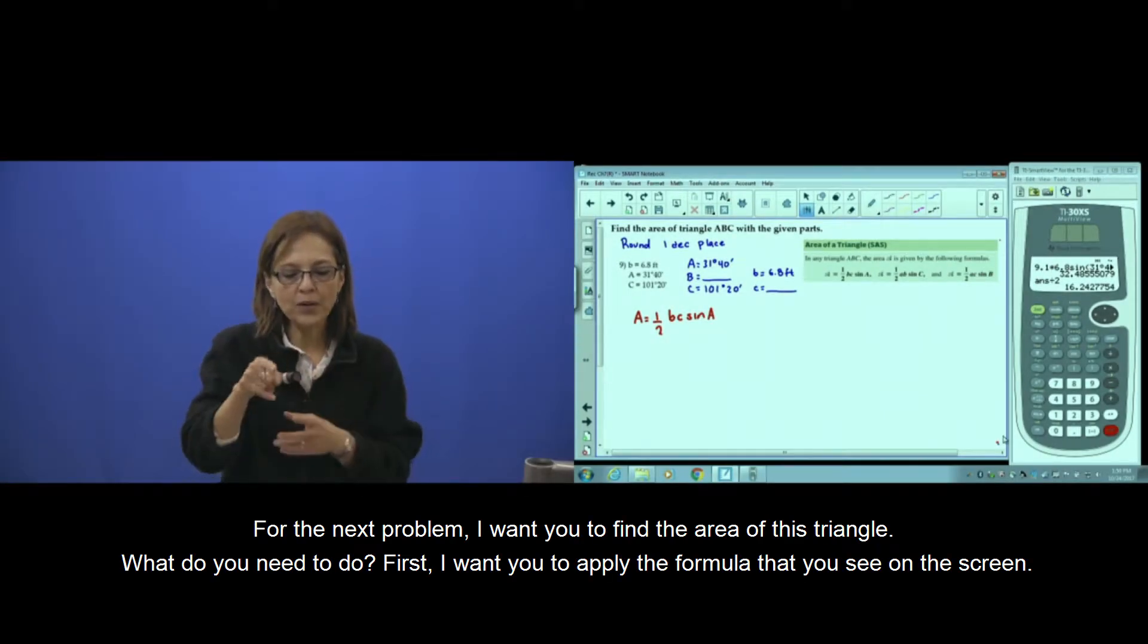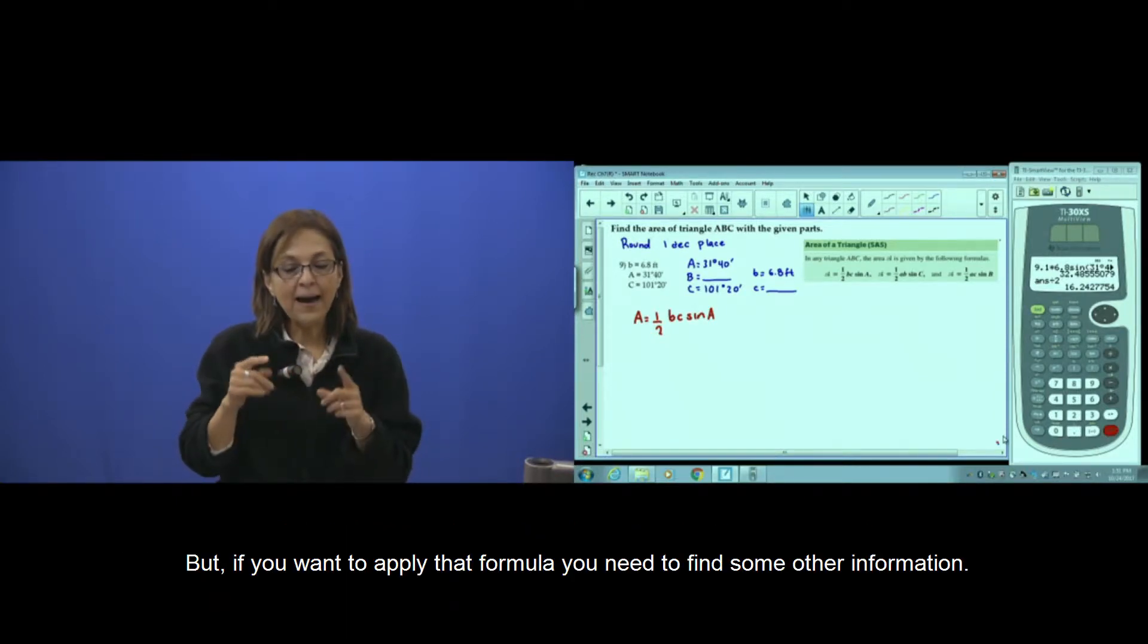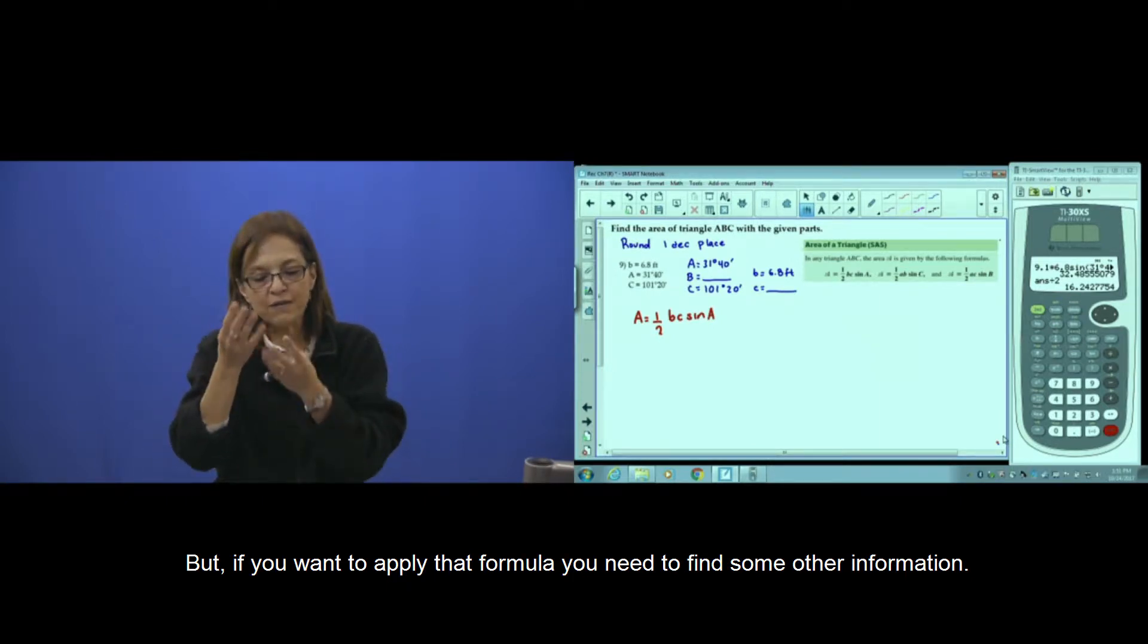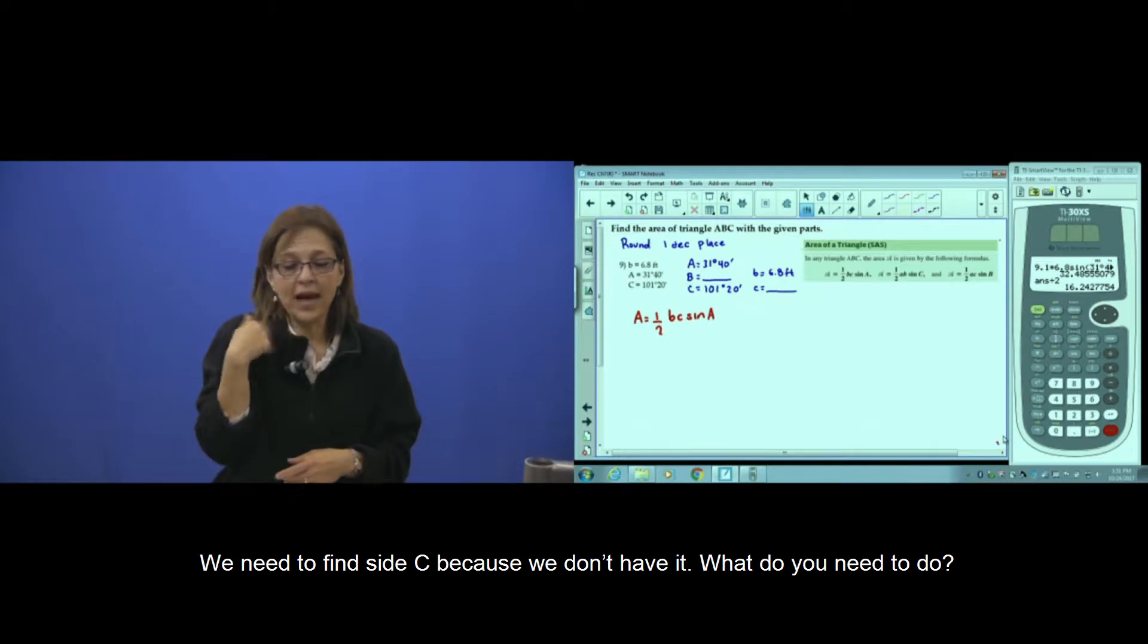For the next problem, I want you to find the area of this triangle. What to do first? I want you to apply the formula you see on the screen, but the problem is if you want to apply that formula, we need to find other information. We need to find side C because we don't have it.